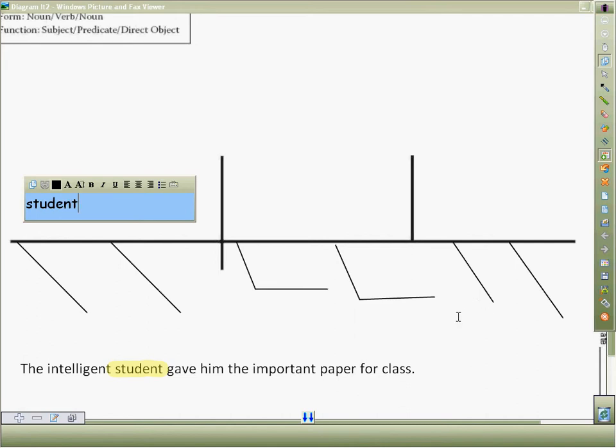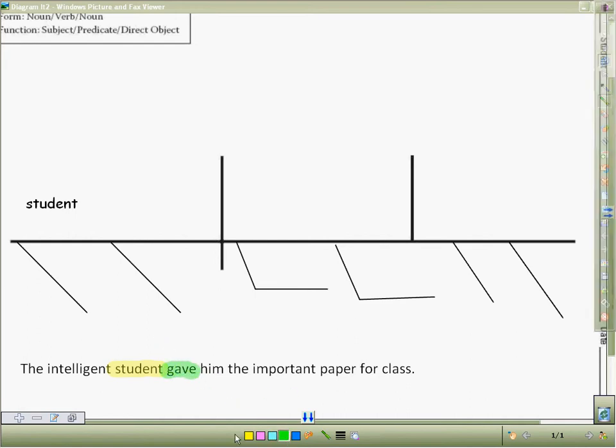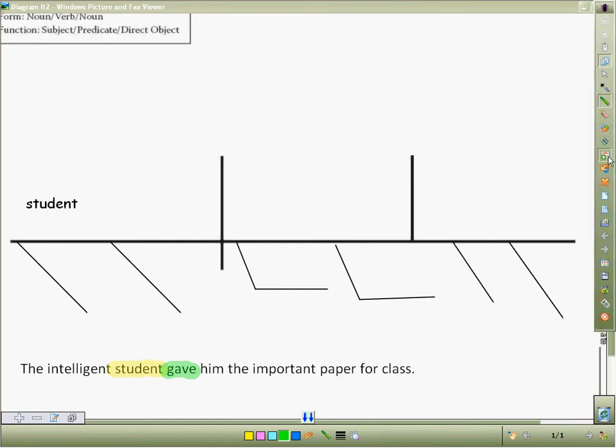The next question that we ask is what did the student do? What did he do? He gave. So gave is our predicate. Gave is a verb, and so we write gave as our predicate.